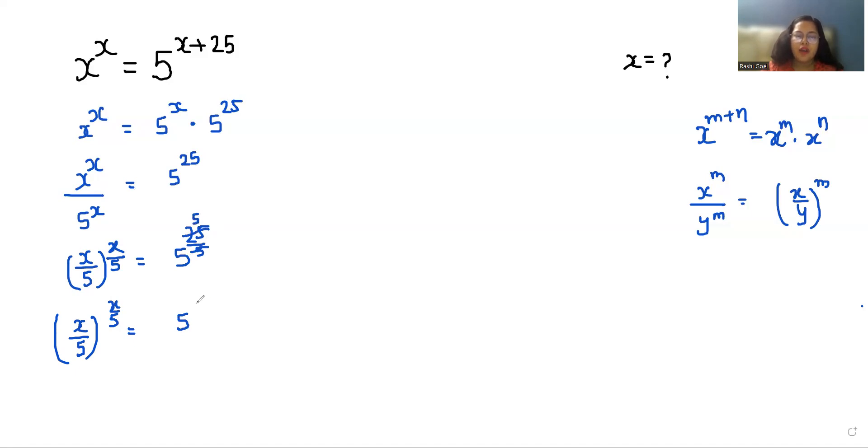Now if we compare both sides, the value of x by 5 is 5, and x is equals to 5 times 5 which is 25. So the value of x is 25.